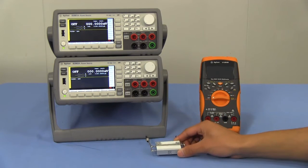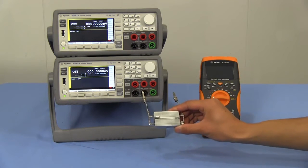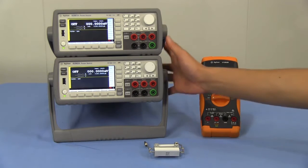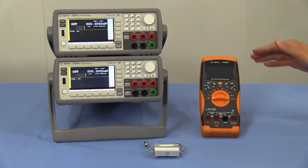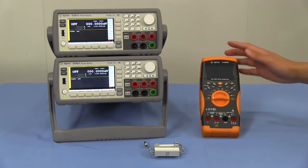DUT stands for device under test. I'll apply 6 amps to a DUT using these power supplies in parallel, and confirm the applied voltage and current using this multimeter.